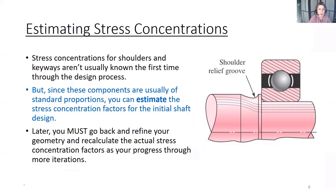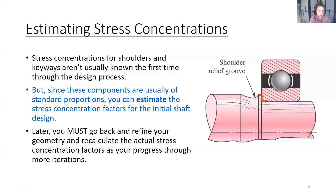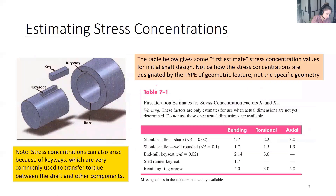Stress concentrations in shafts is something we pay a lot of attention to. In shaft design you often don't know the total geometry at the outset, so you have to estimate your stress concentrations. But components are usually of standard proportions — for example, you need a certain shoulder height to support a bearing. These standard proportions are used to estimate stress concentration factors using Table 7-1.